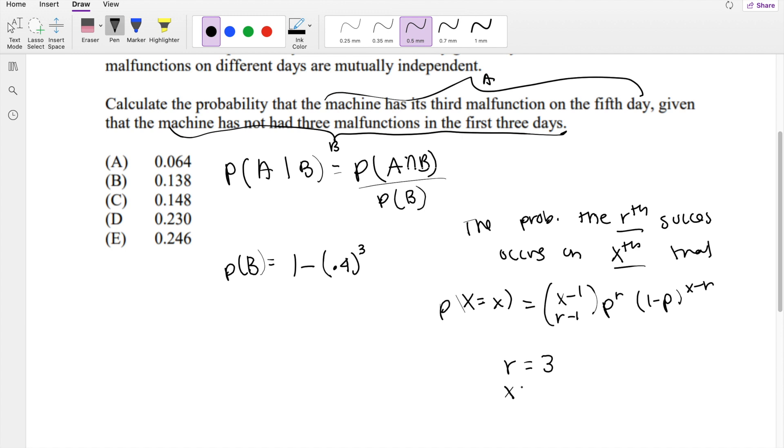And then x trial, how many trials are we doing? Five days. So they're basically saying what is the probability that you're going to have three malfunctions on the fifth day?